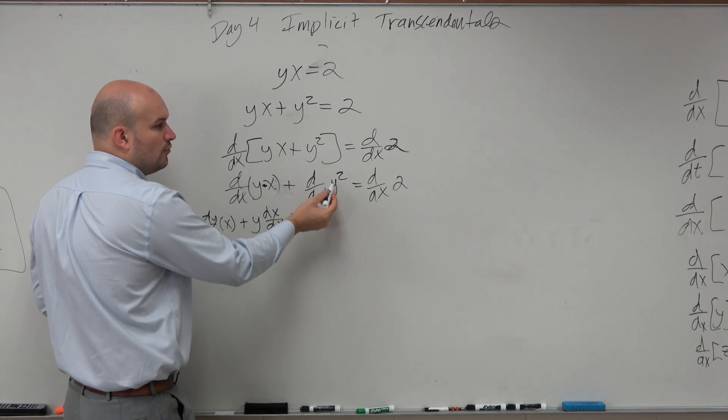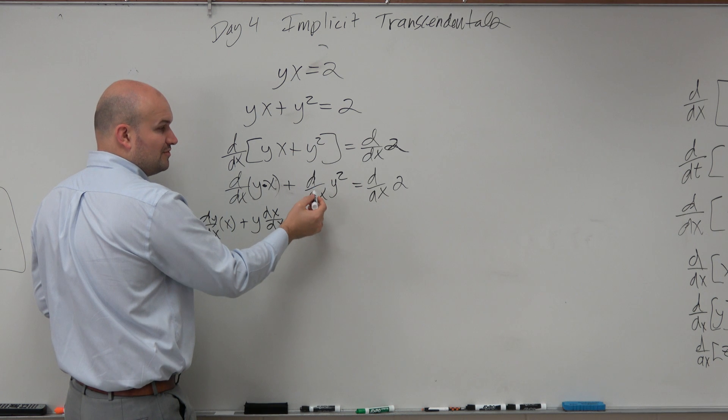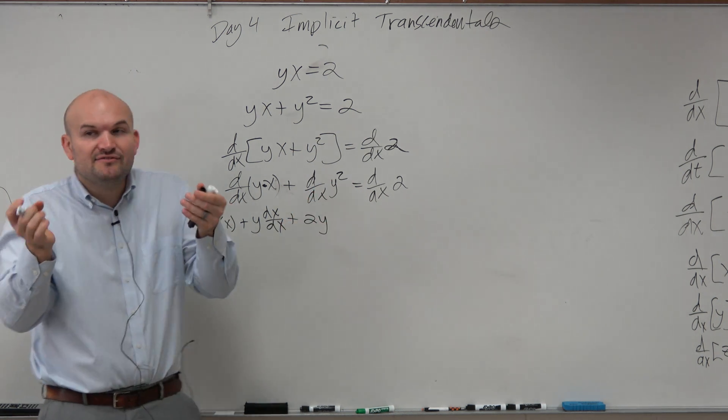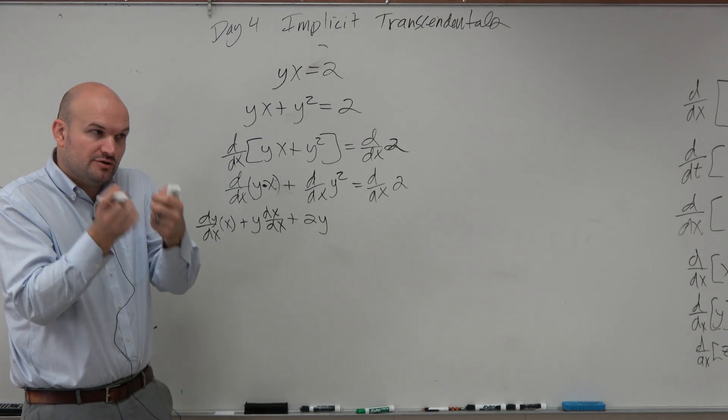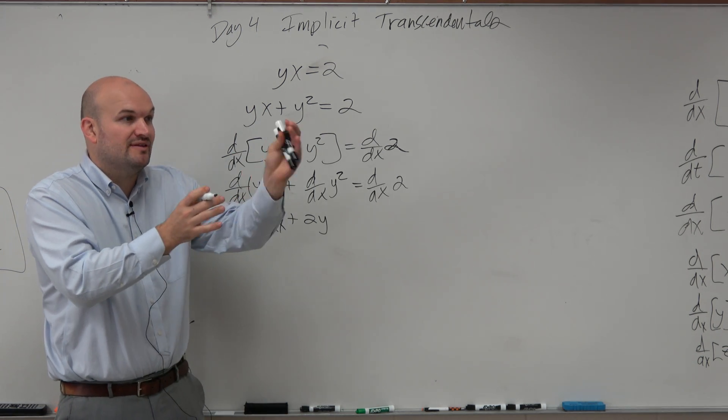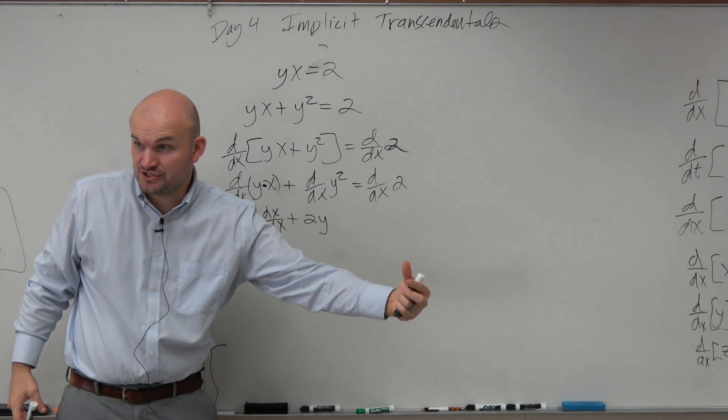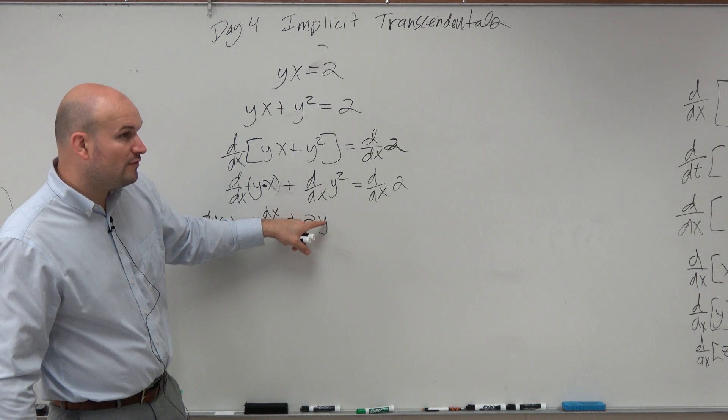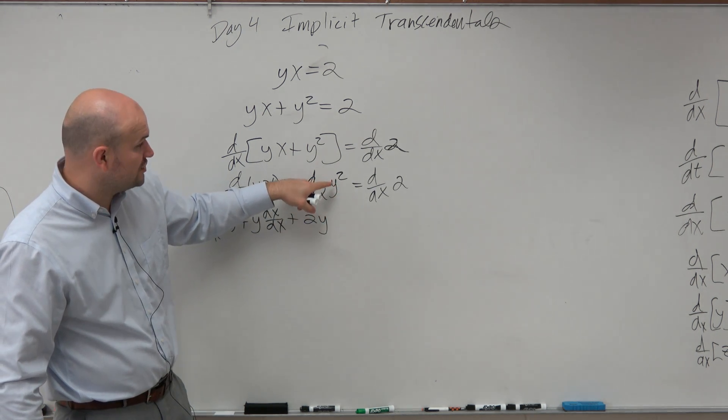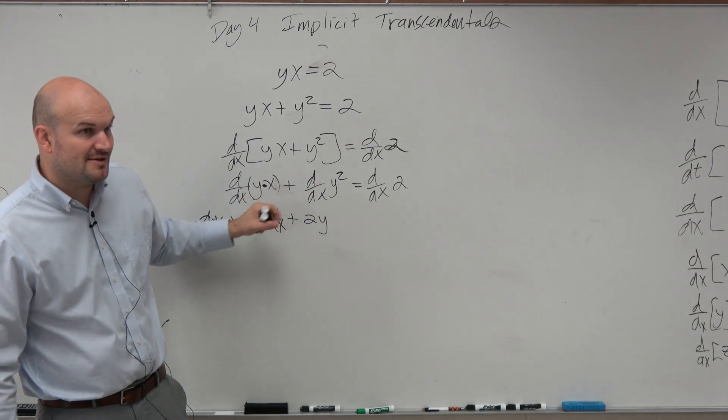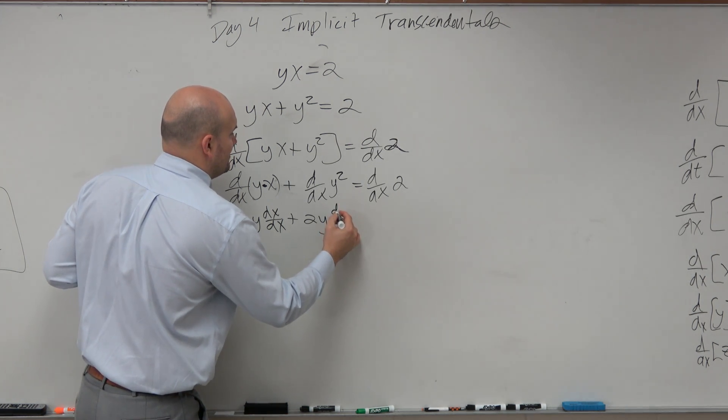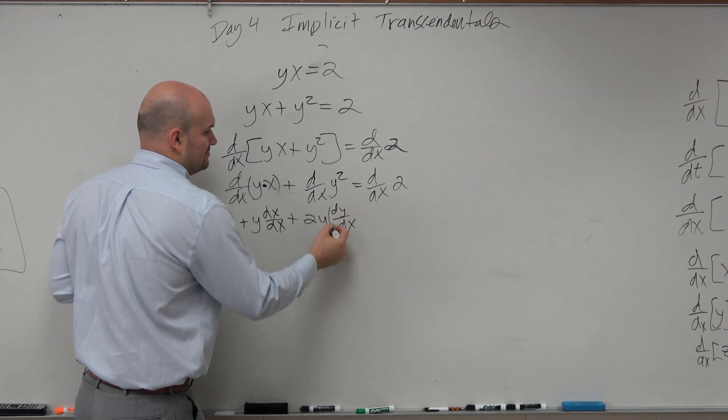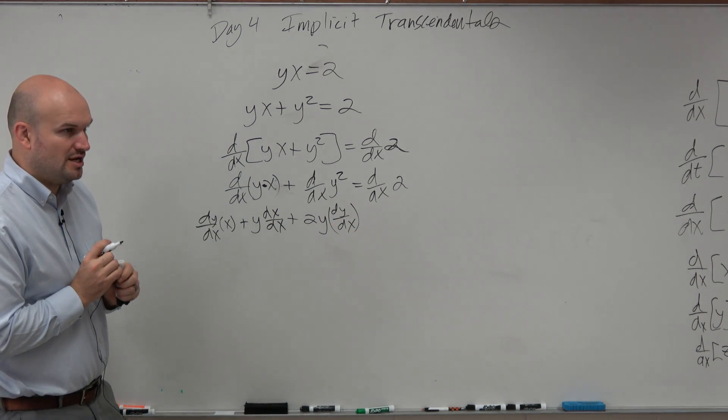Plus the derivative of y squared with respect to x. Well, we're still going to take the derivative. But again, think of the y as like a chain rule. When you're doing the chain rule, you apply the derivative, and then you take the derivative of the inside function. So we take the derivative of y squared, and then we have to take the derivative of y, because that's the inside function. So the derivative of y with respect to x is dy over dx, applying just the basic chain rule.